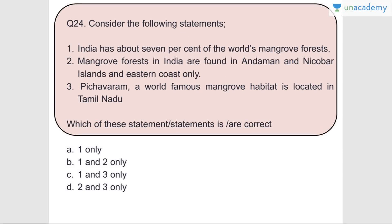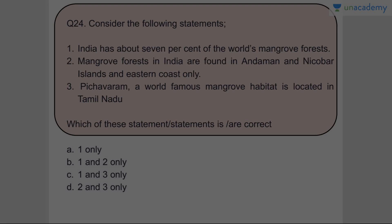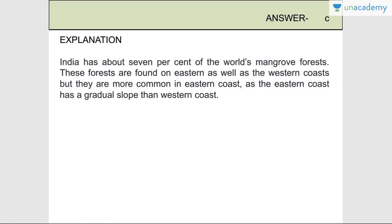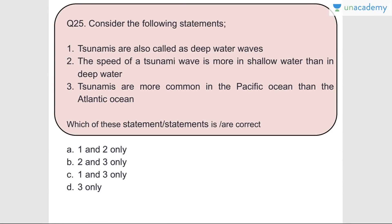Question number twenty-four: Consider the following statements. Statement one - India has about 7% of the world's mangrove forest - correct. Statement two - mangrove forests in India are found only in Andaman and Nicobar Islands and the eastern coast - wrong. Statement three - Pichavaram, a world-famous mangrove habitat, is located in Tamil Nadu - correct. Answer is C, one and three. India's mangrove forests are found on both the eastern and western coast, but are more common on the eastern coast as it has a more gradual slope.